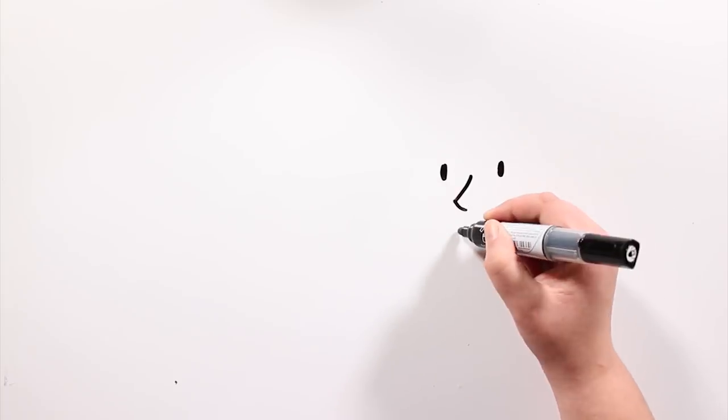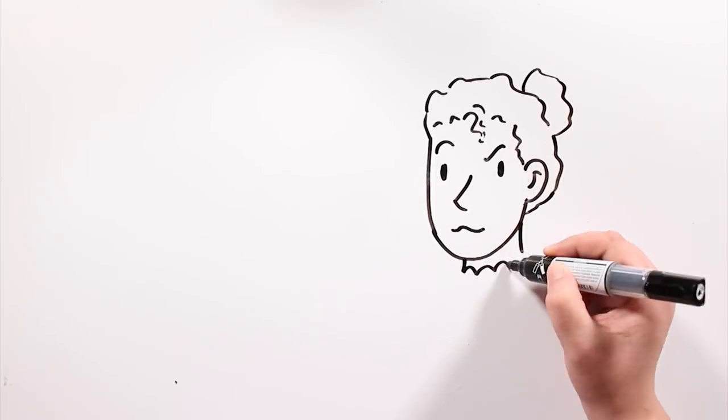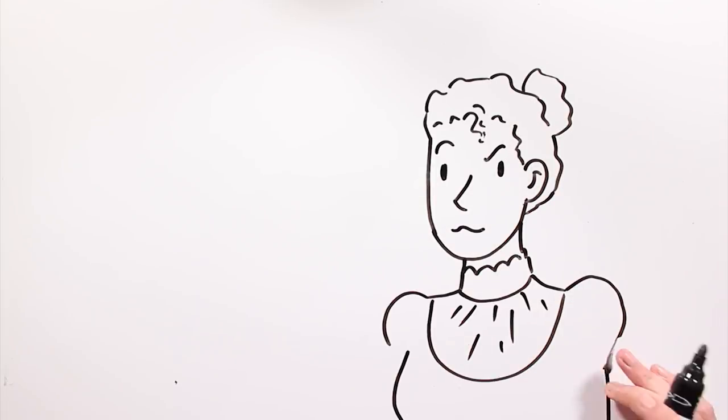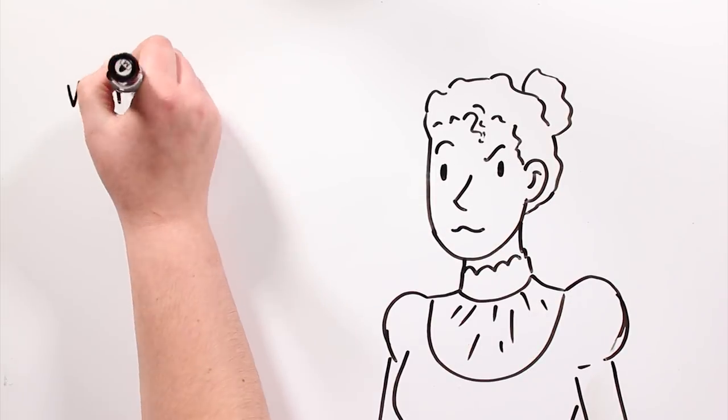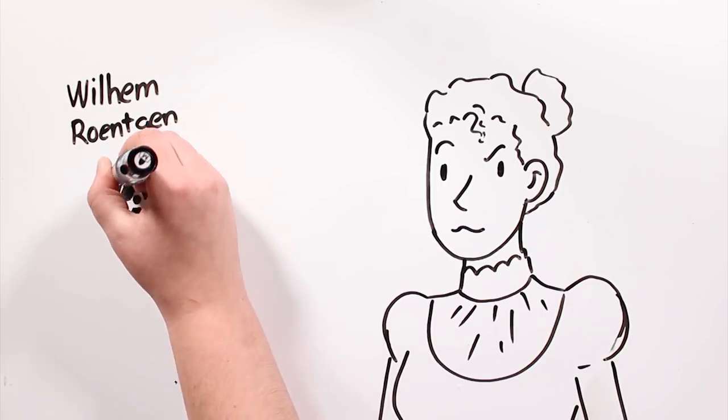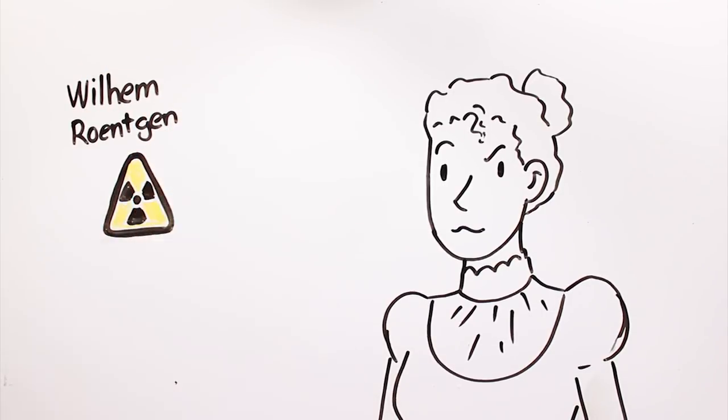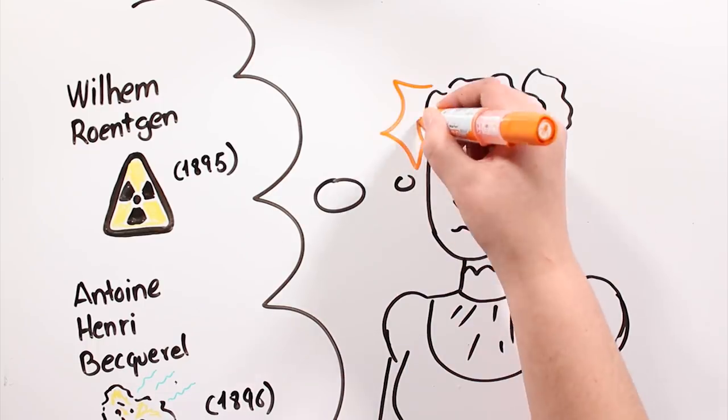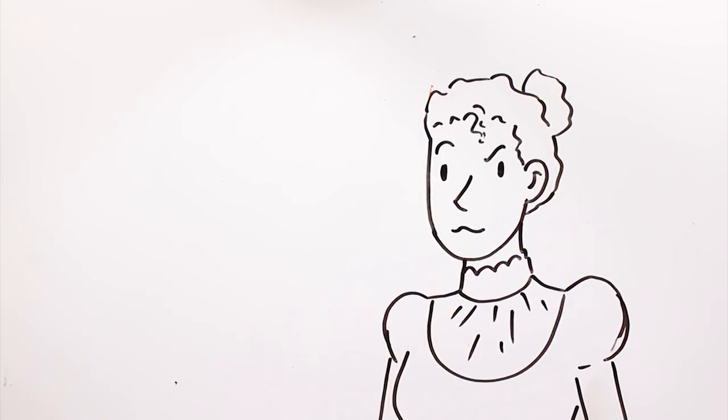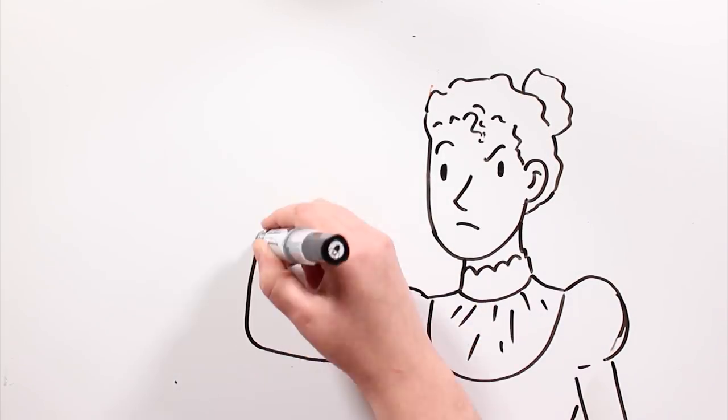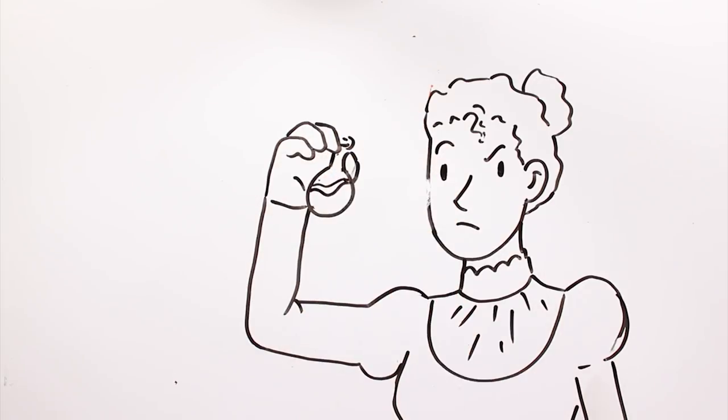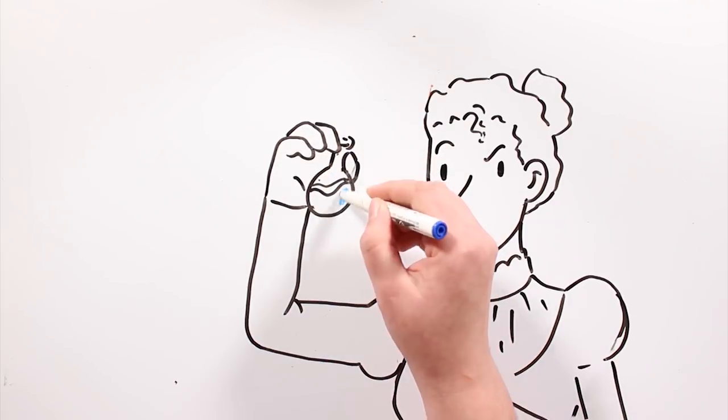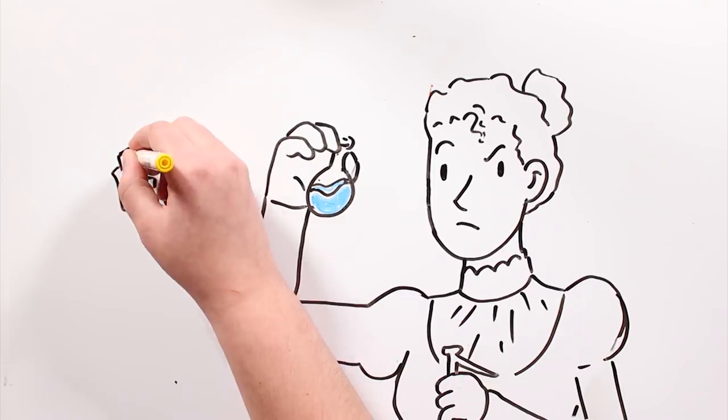When Marie found out about the recent discoveries about the new types of radiation, she decided to investigate them. She started studying the radiation of uranium, and using the piezoelectric techniques invented by Pierre, she measured, carefully, the radiations in pitchblende, a mineral that contained it. Once she saw that the radiations of the mineral were more intense than those of uranium itself, she realized there must be unknown elements more radioactive.